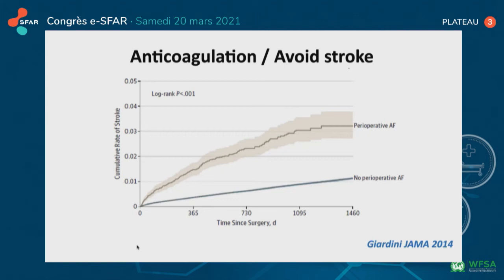As post-operative atrial fibrillation increases the risk of stroke, anticoagulation should be performed for each post-operative atrial fibrillation lasting at least 48 hours, for four to six weeks, and must be reassessed by a cardiologist. Oral anticoagulation was associated with a significantly lower risk of thromboembolic events in both post-operative and non-surgery atrial fibrillation compared with no oral anticoagulation. Some studies are trying to clarify the optimal long-term oral anticoagulation used among patients developing post-operative atrial fibrillation.